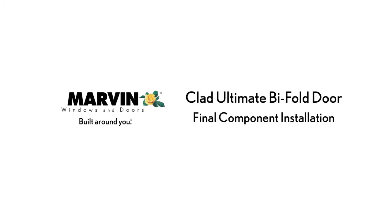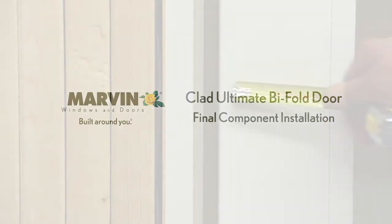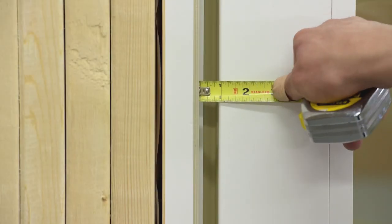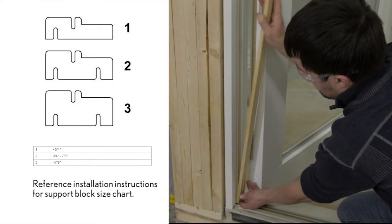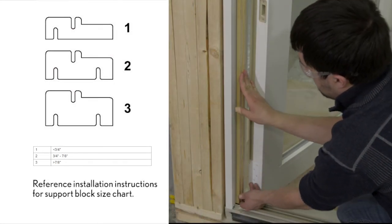Marvin Clad Ultimate Bifold Door Final Component Installation. Measure the gap between the panel and jamb. Choose proper height support block. Install support blocks.